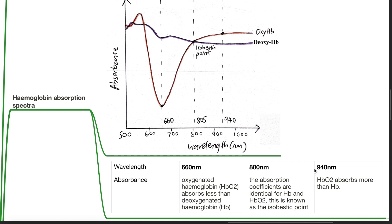At a wavelength of 940 nm, oxygenated hemoglobin absorbs more light than deoxygenated hemoglobin.